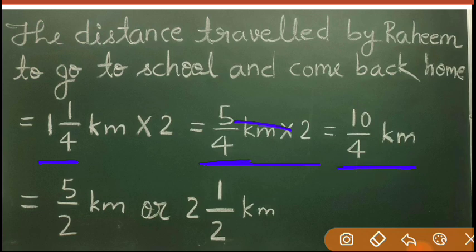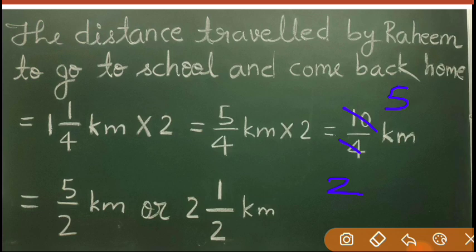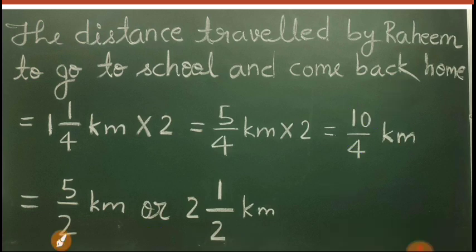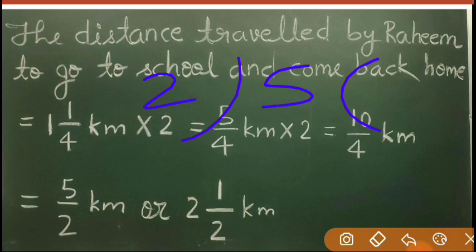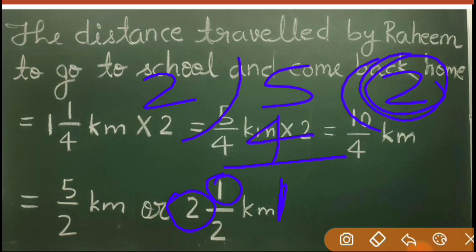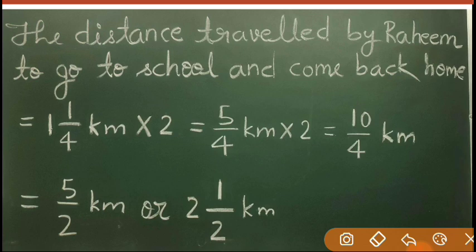Now 10 upon 4 needs to be reduced. Divide numerator and denominator by 2: 10 divided by 2 is 5, 4 divided by 2 is 2, giving 5 upon 2 km. Then change this improper fraction to a mixed fraction: 2 goes into 5 twice with remainder 1, so the answer is 2 and a half km. Note this solution in your notebook.